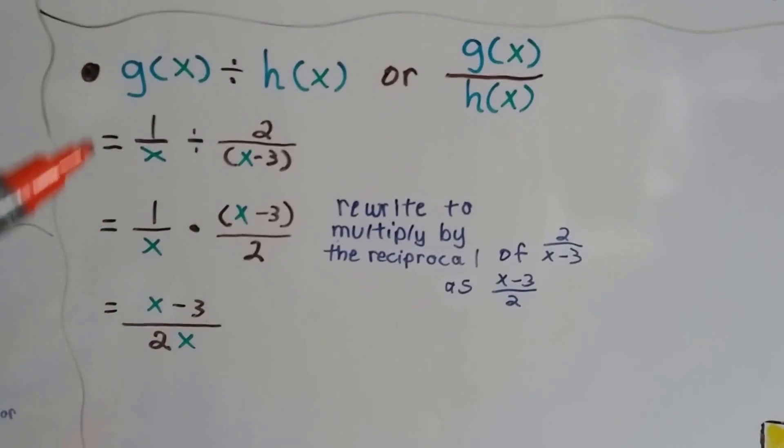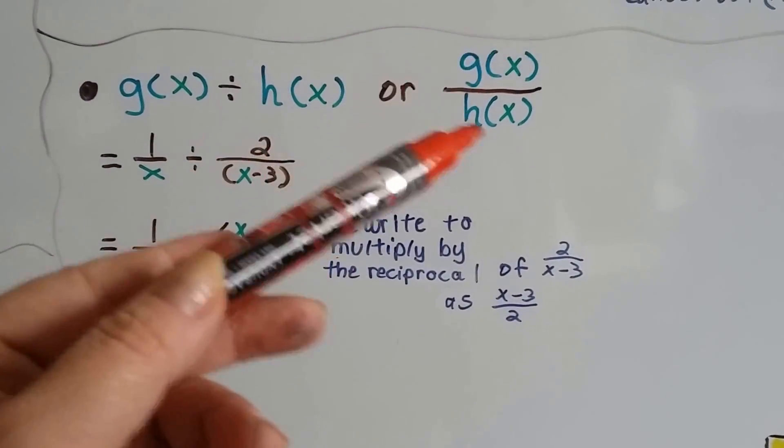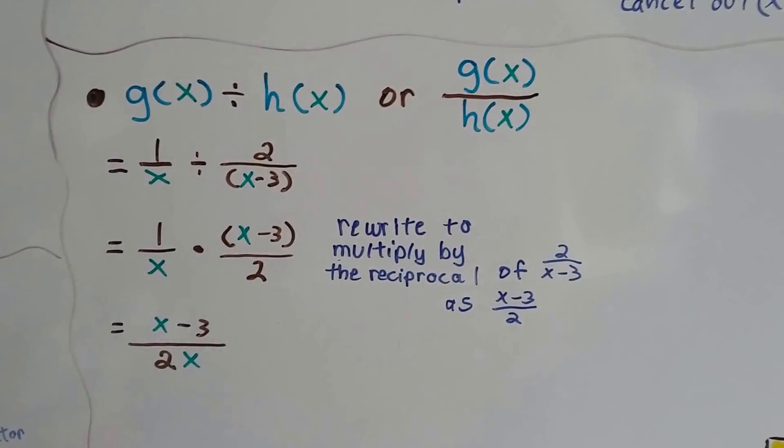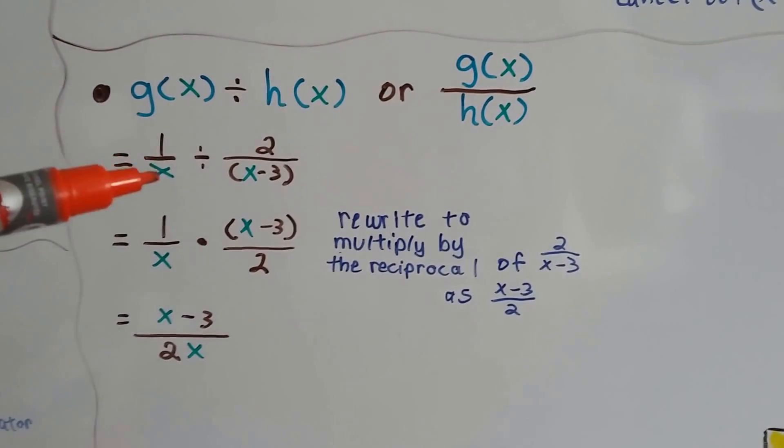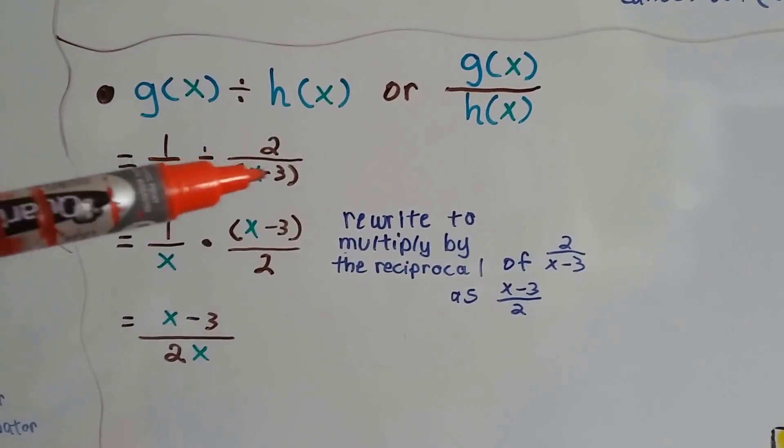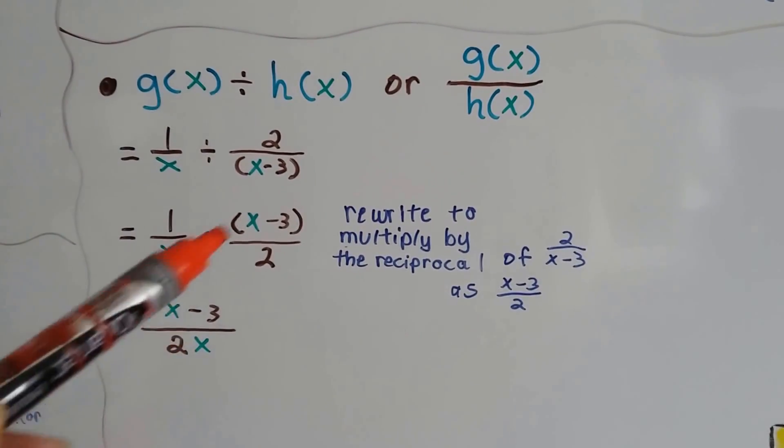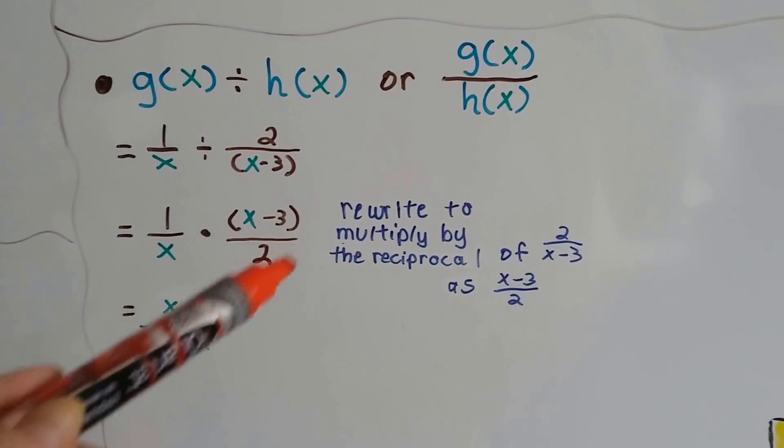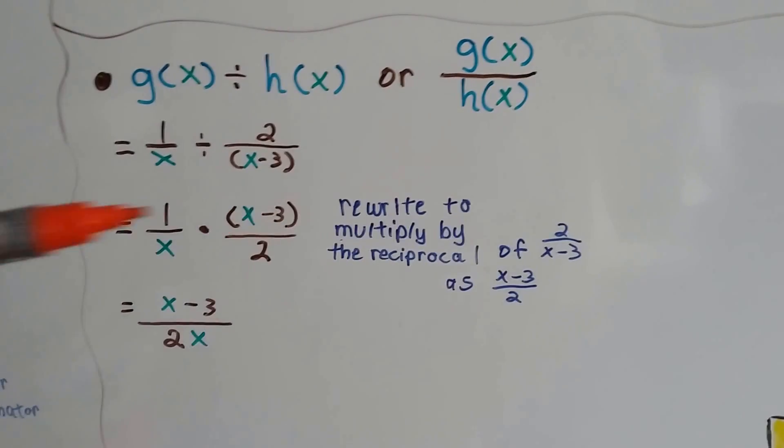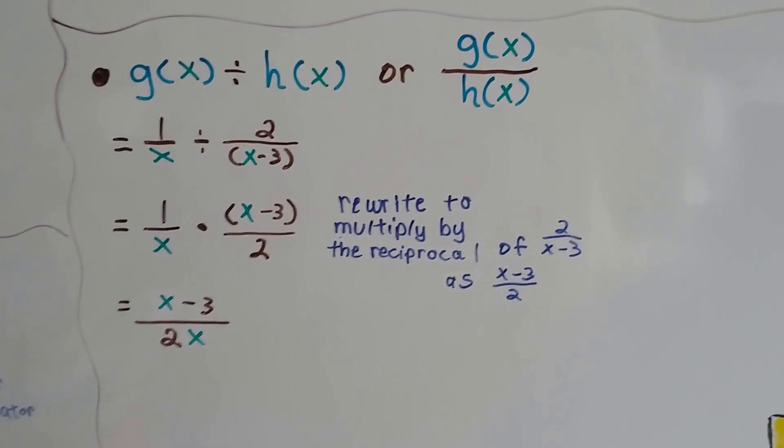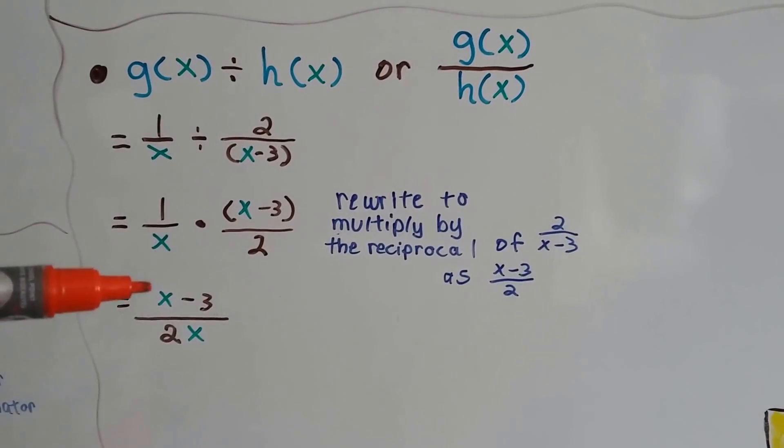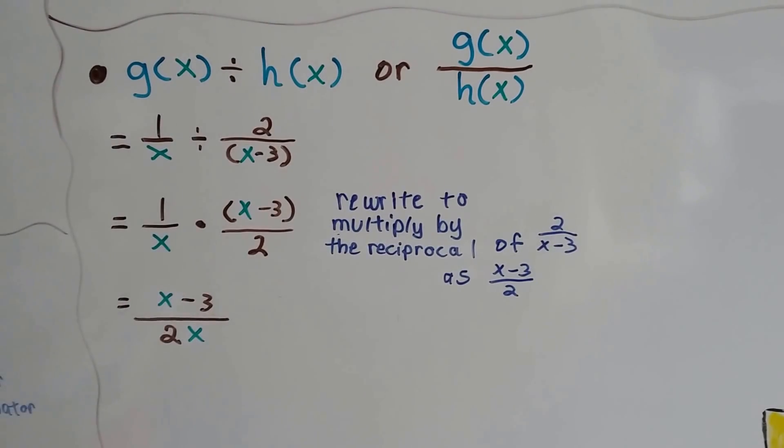For division, it would be the same thing as if it was written as a fraction, because they're just little division problems. So we'd have 1 over x divided by 2 over x minus 3. We can just flip this guy around as a reciprocal and multiply straight across like we would with regular fractions. We'd end up with x minus 3 over 2x. Isn't that easy? These are so easy.